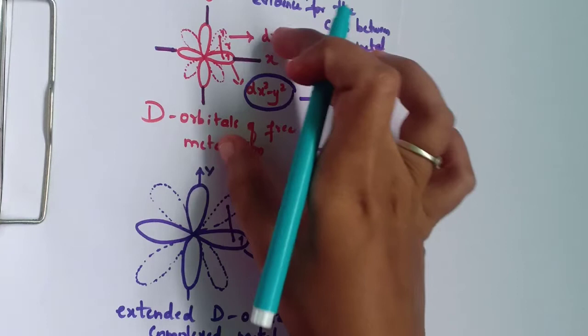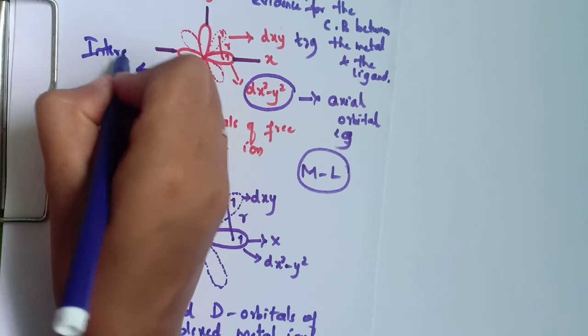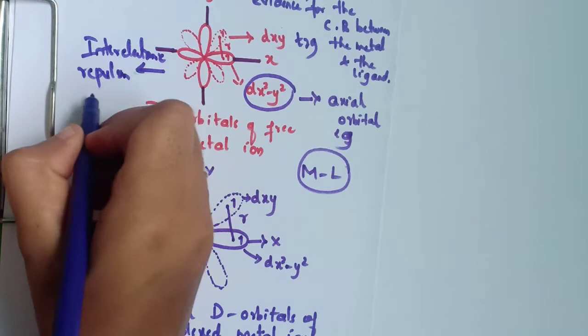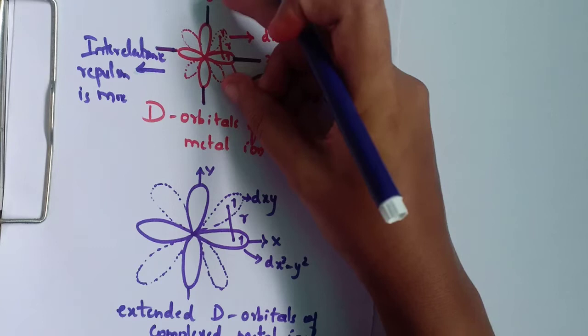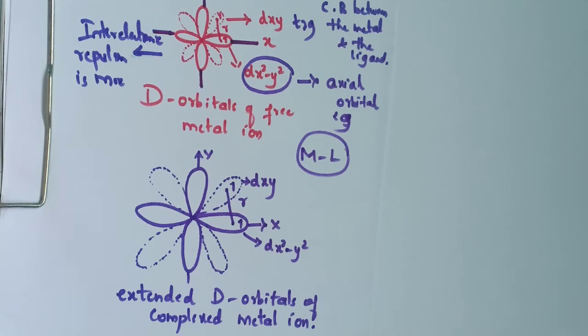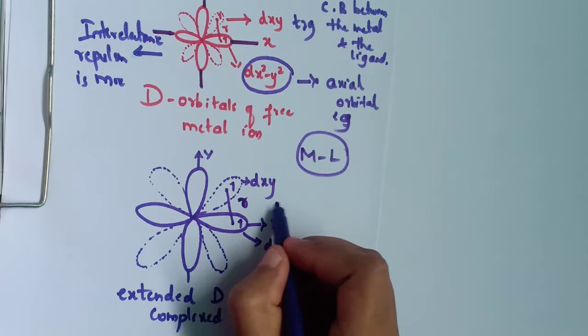An important point is that inter-electronic repulsion is more in the free metal ion. The electrons are very close to each other, so the distance r between them is small, meaning inter-electronic repulsion is large. But after the extension in the complex metal ion, the electrons are farther apart, so inter-electronic repulsion is less.